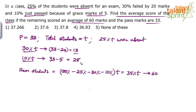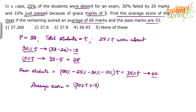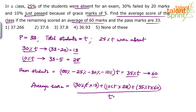So, 30% have scored 13, 10% have scored 28, and 35% have scored 60. Average score equals total score divided by total number of students. That gives us: 30% of T × 13 plus 10% of T × 28 plus 35% of T × 60, divided by T. Since T appears in both numerator and denominator, it cancels. So: 30% of 13 is 3.9, and 10% of 28 is 2.8.